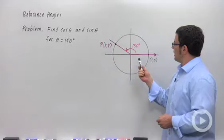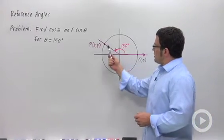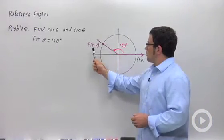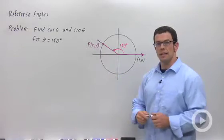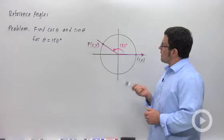And I've drawn theta here in standard position. So I need to find the coordinates of point Q. Remember, x is going to be the cosine of 150 degrees and y is the sine. And the trick to this is finding the reference angle.